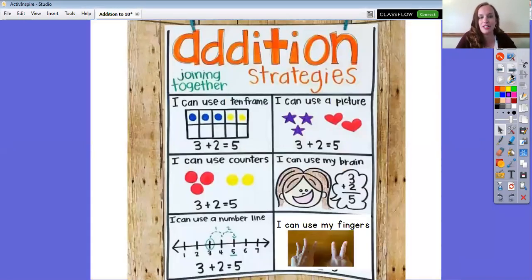We have learned various ways or strategies to solve addition problems. So let's go over them together. Together in the classroom we have used a 10 frame to solve addition problems. This says I can use a 10 frame and the problem they're showing here is 3 plus 2, and 3 plus 2 does equal 5. If you count all those circles together on the 10 frame it does equal 5.